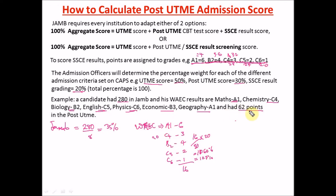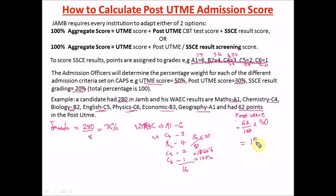For the Post-UTME, the candidate scored 62 points. Let's say this university uses a total score of 100 for the Post-UTME exam. To get the 30% component: 62 ÷ 100 × 30. Punching this into the calculator gives 18.6%. So the total aggregate score is: 35% + 10.7% + 18.6% = 64.3%.